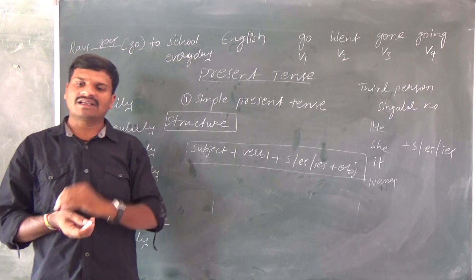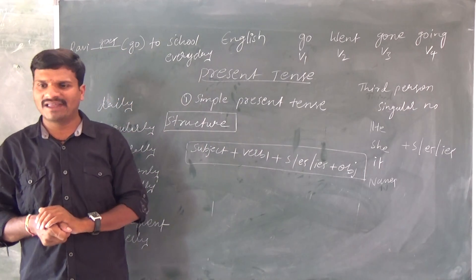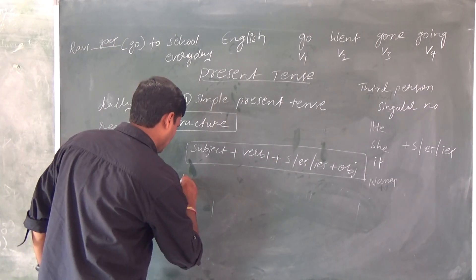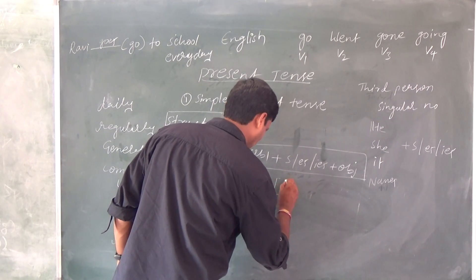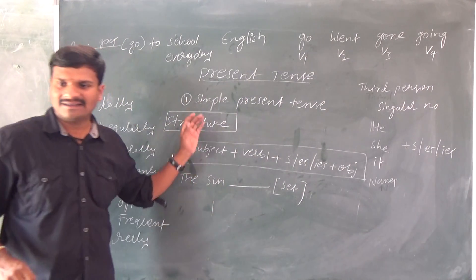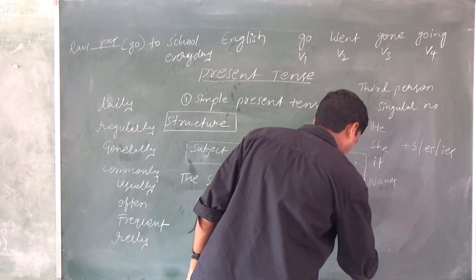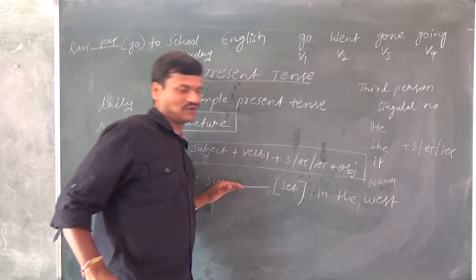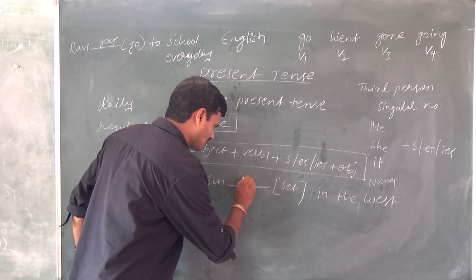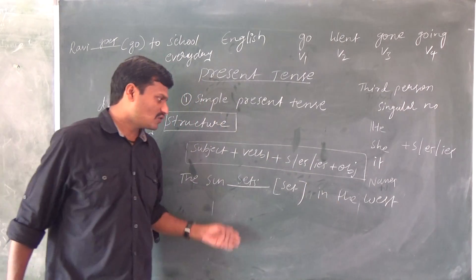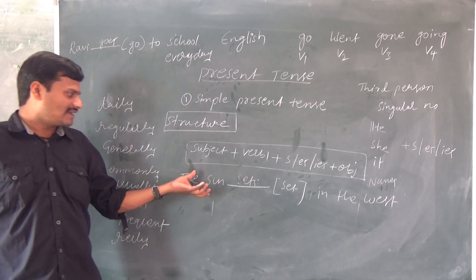Second example: 'The sun __ set in the west.' This is a universal truth, so it comes under simple present tense. The sun sets in the west. And another example: 'Water __ boil at 100 degrees Celsius.' You can tell very easily — 'Water boils at 100 degrees Celsius' — because it is a universal truth and a general truth.